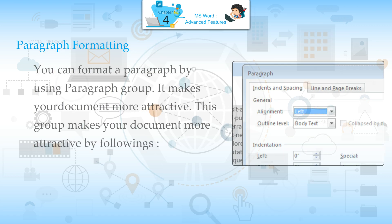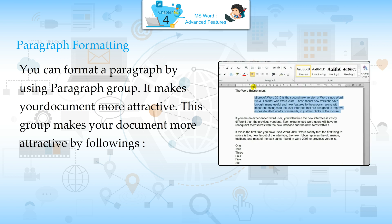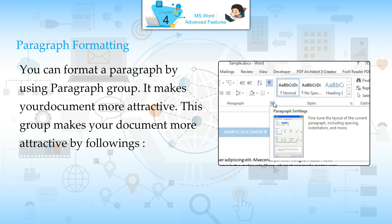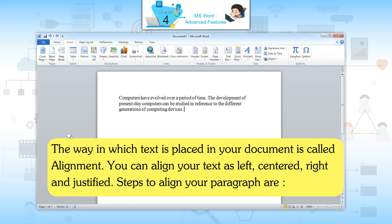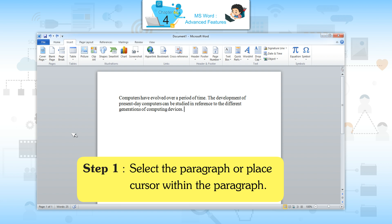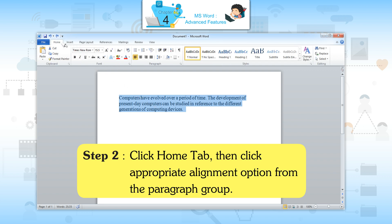Paragraph Formatting: you can format a paragraph by using the Paragraph group, which makes your document more attractive. The way in which text is placed in your document is called alignment. You can align your text as left, centered, right, and justified. Steps to align your paragraph: Step 1 — select the paragraph or place the cursor within the paragraph. Step 2 — click the Home tab. Step 3 — click the appropriate alignment option from the Paragraph group.